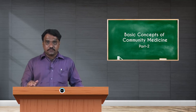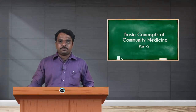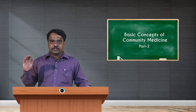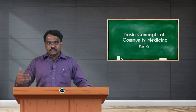The levels of health are divided into separate stages: ideal health, good health, negative health, apparent disease, complications, and death. Ideal health is nothing but hundred percent health — when an individual has a balanced state across all seven aspects of the wellness wheel: physical, mental, spiritual, emotional, environmental, occupational, and social levels. That balanced state is considered ideal health.